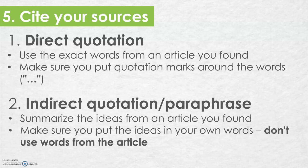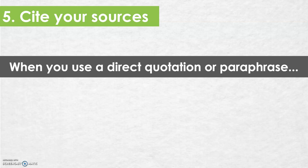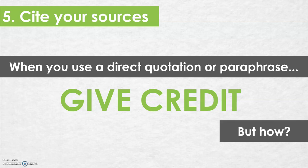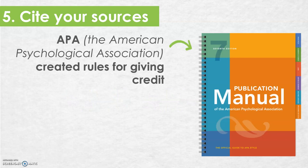Whenever you use a direct quotation or an indirect quotation or paraphrase, you have to make sure that you give credit for the information to show where you got those words or those ideas. But how can you give credit? Well, the American Psychological Association, or APA, has created lots of rules for giving credit, and it's really important that we follow those rules to show where we got our ideas from and to help our readers learn more about the ideas that we're talking about.